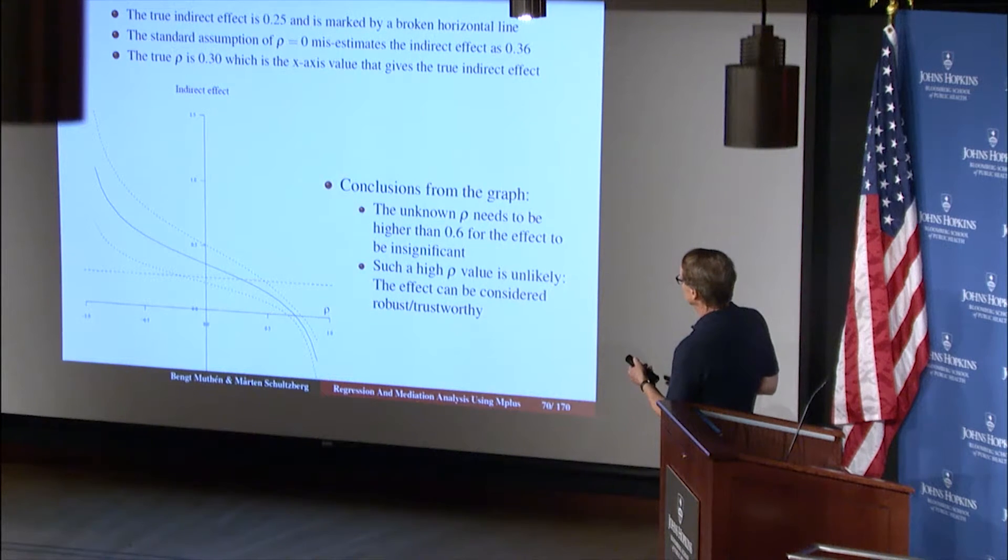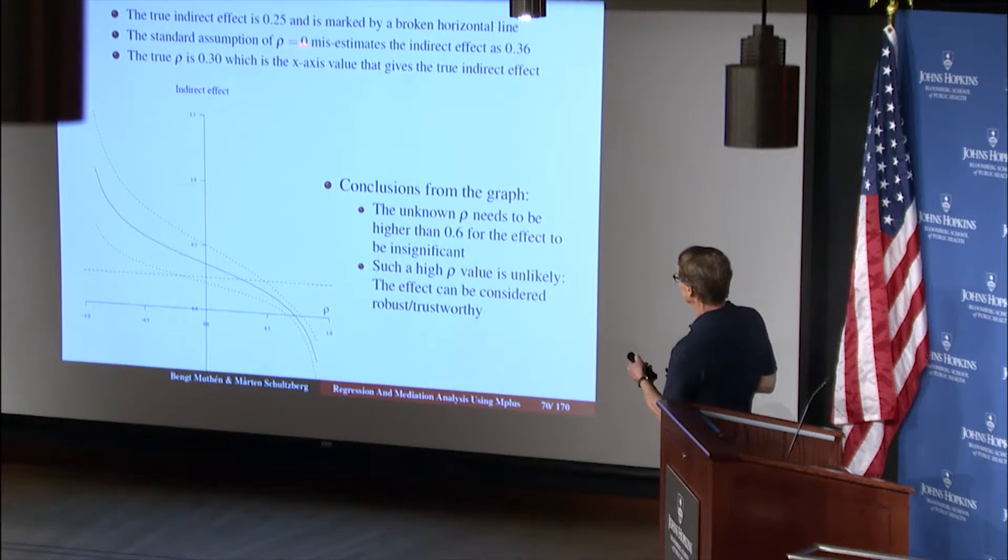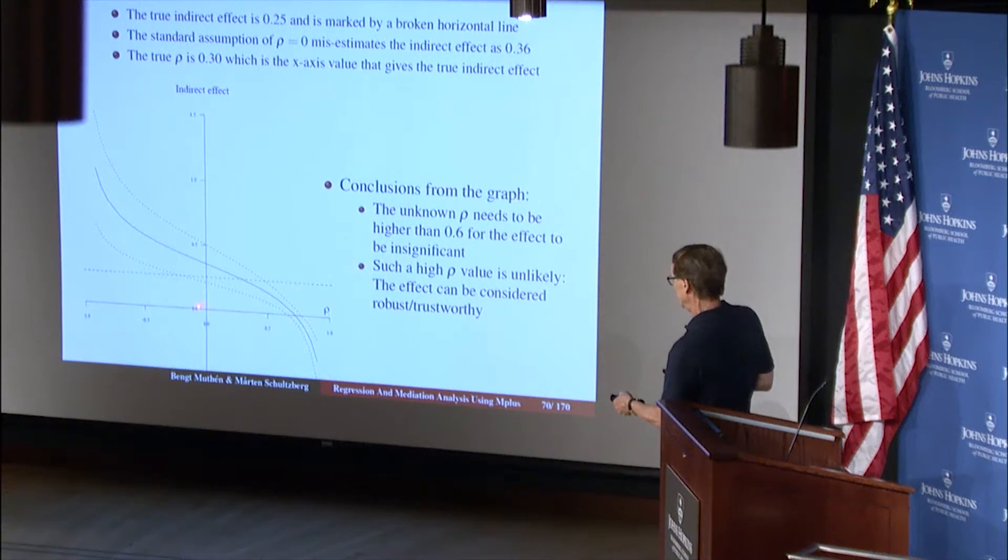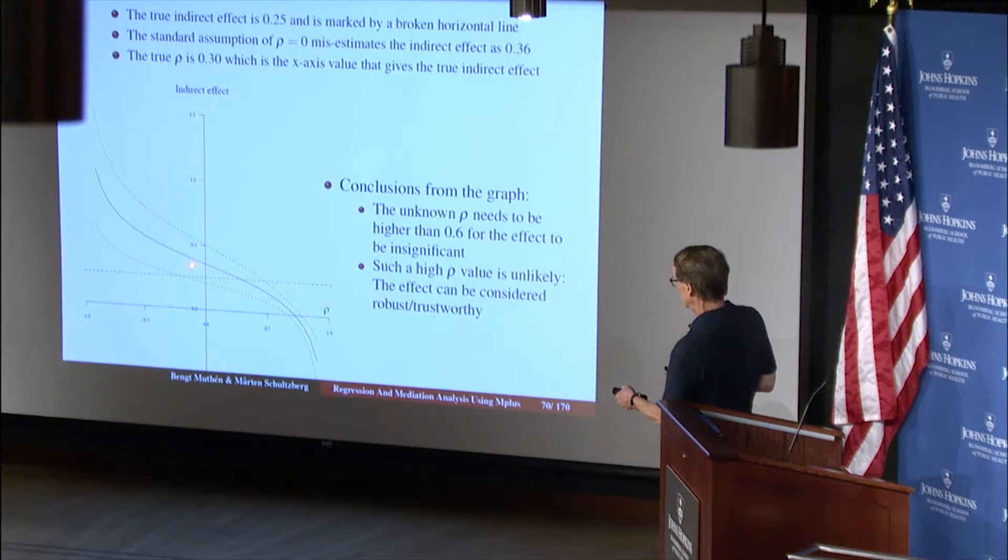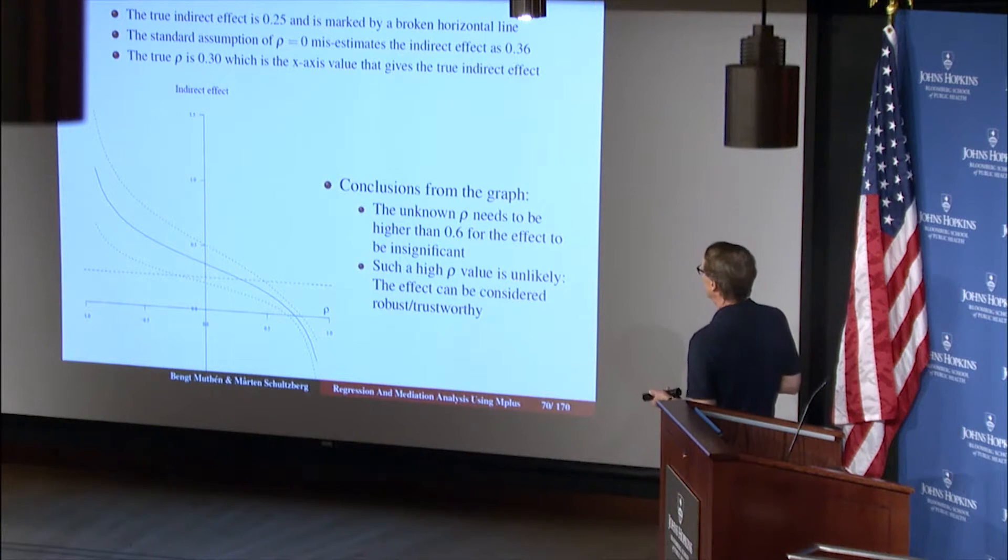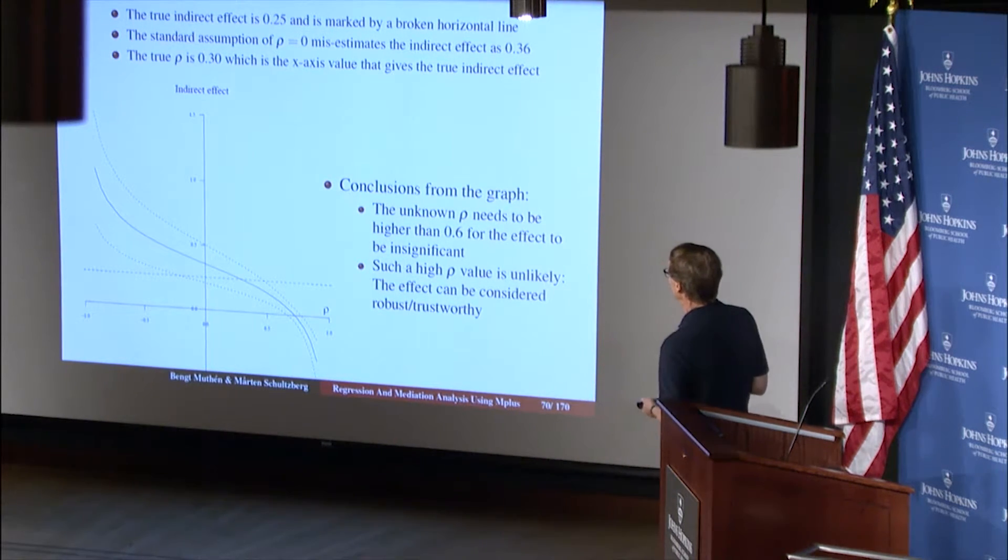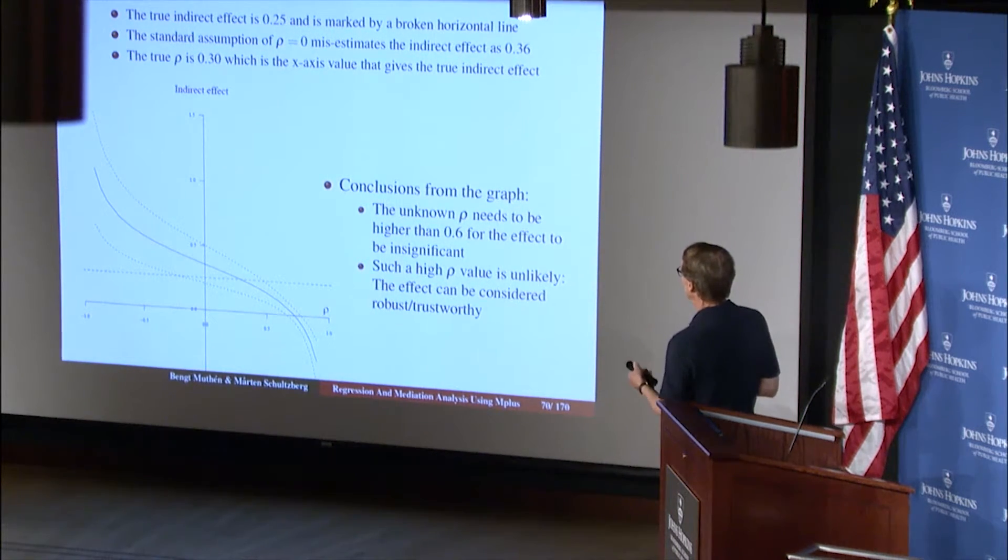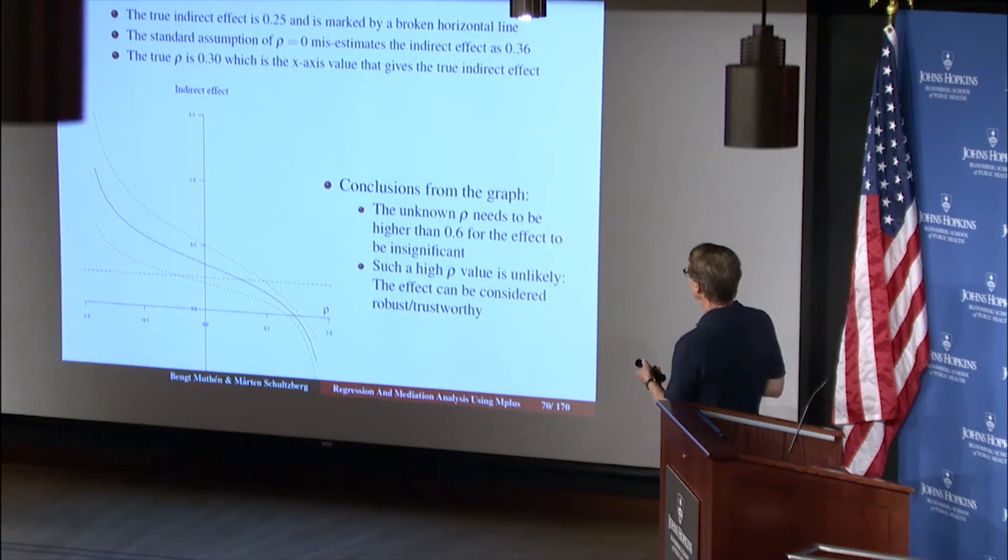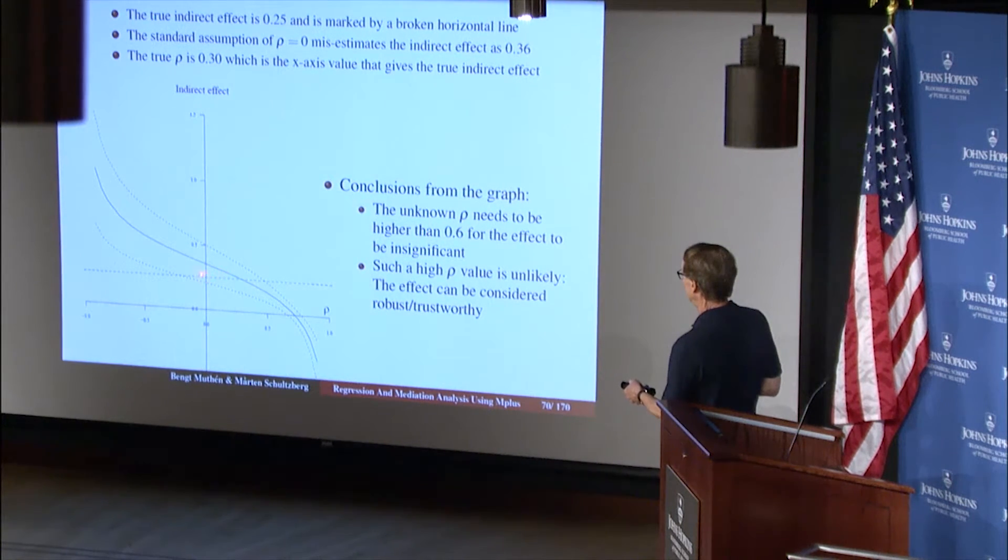Now, standard assumption is that rho is equal to 0. If rho is equal to 0, this is the estimate that we will get, 0.36. So scribble 0.36 here. So if you generate data and analyze where you have a certain rho correlation and analyze it without it, you're going to get an indirect effect estimate that's 0.36 instead of 0.25.